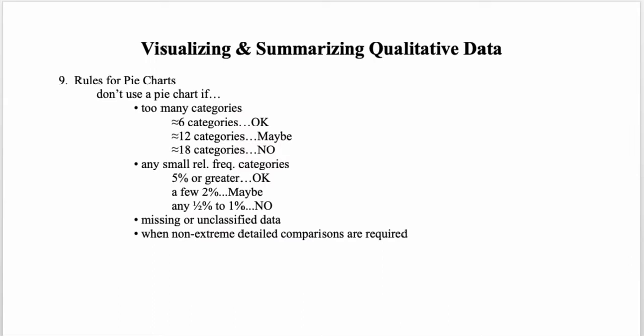Here are the rules for pie charts — best thought of as when you wouldn't use one. You wouldn't use a pie chart if there are too many categories: about six categories is probably fine, 10 to 12 puts you in the 'maybe' range, and 15 to 18 or more is likely too many pieces of the pie to be useful.